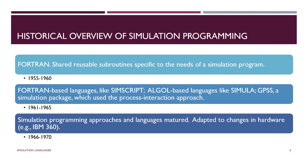Then, from around 1960-61 to 1965, there was an explosion of different languages and packages for simulation. There was Simscript, which was based on Fortran, and Simula, which was based on Algol — Algol being what you might call the European version of Fortran, very popular in Europe while Fortran was popular in the States. And then GPSS was a popular example of a prepackaged software tool, rather than a general-purpose language like Simscript or Simula.